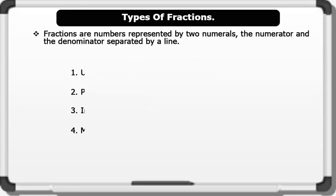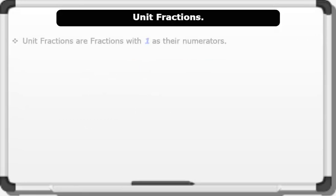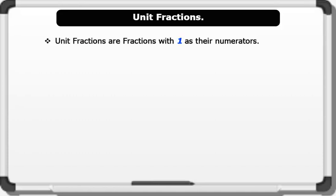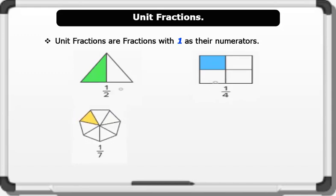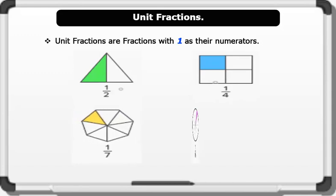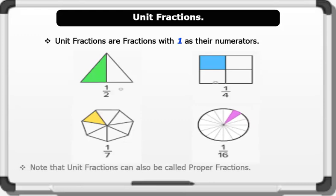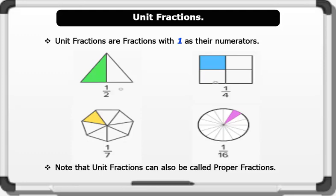Unit fractions are fractions with 1 as their numerator. Examples of unit fractions include: 1 over 2, 1 over 4, 1 over 7, and 1 over 16. Note that unit fractions can also be called proper fractions.